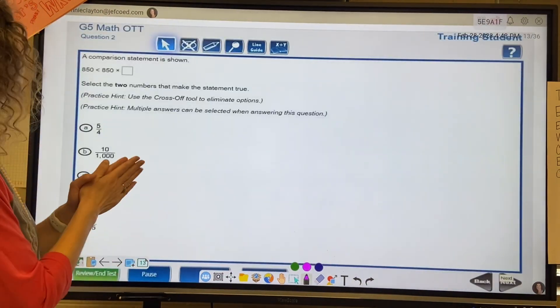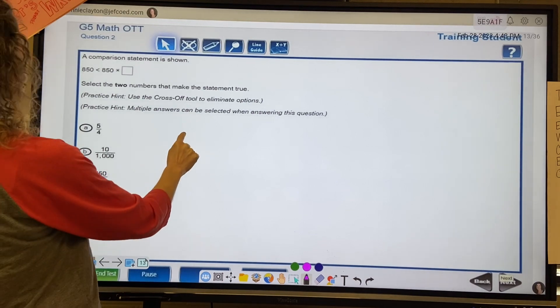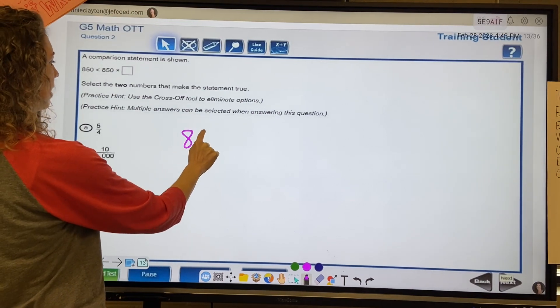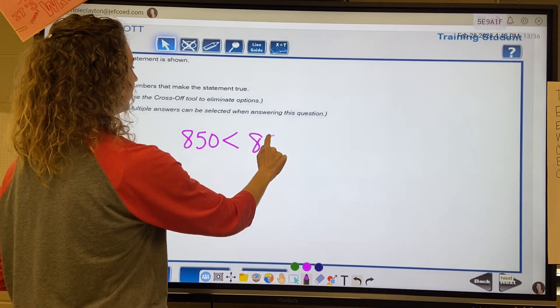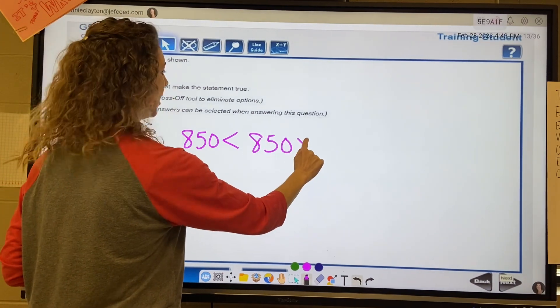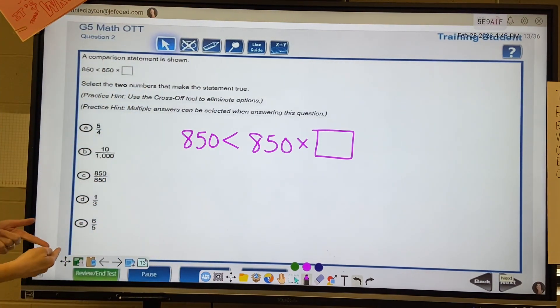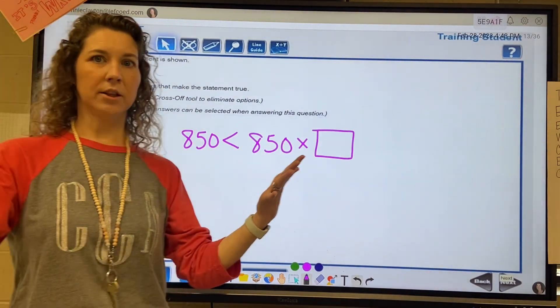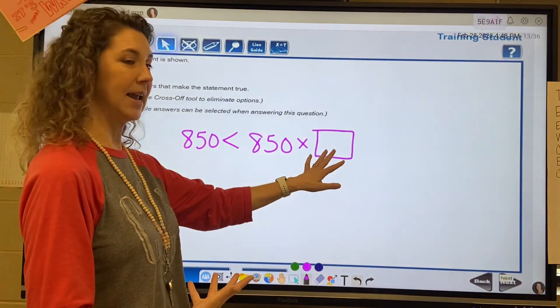All right, moving on. A comparison statement is shown: 850 is less than 850 times what? I'm going to write it bigger: 850 is less than 850 times what number, and we have answer choices. Okay, if you think logically, if you multiply 850 times anything...